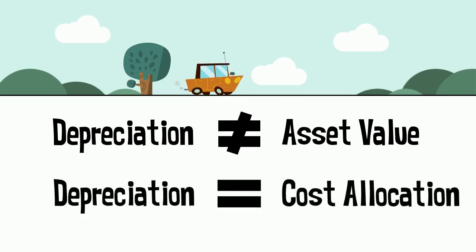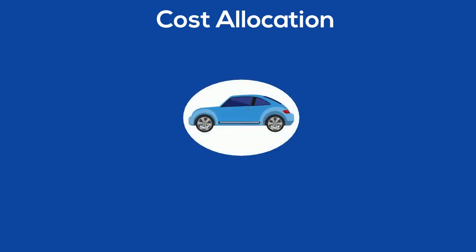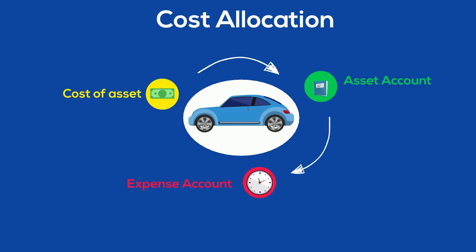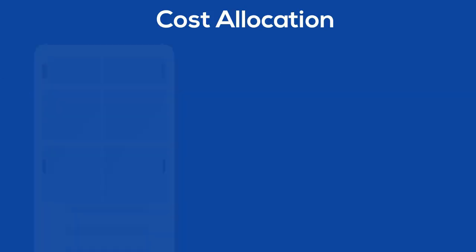Depreciation is a cost allocation method. When we purchase an asset like a vehicle, we take all the cost of the asset and include it in an asset account — vehicles in this example. As we use the asset, we want to record that use and allocate the cost to an expense account. We've done the same for other assets — think about supplies.